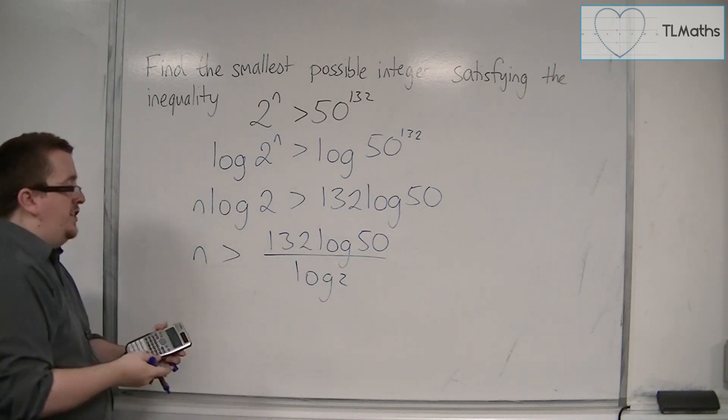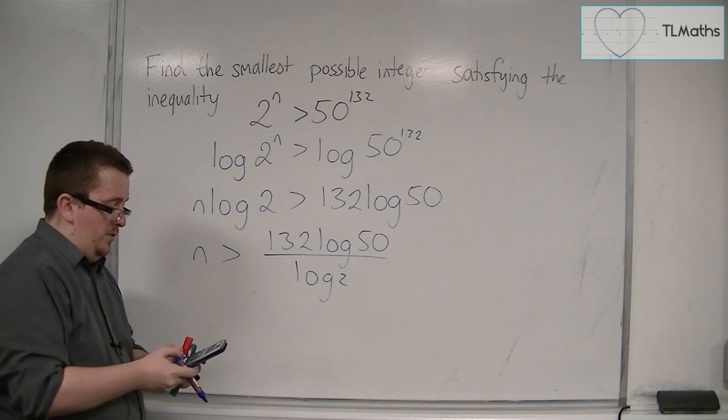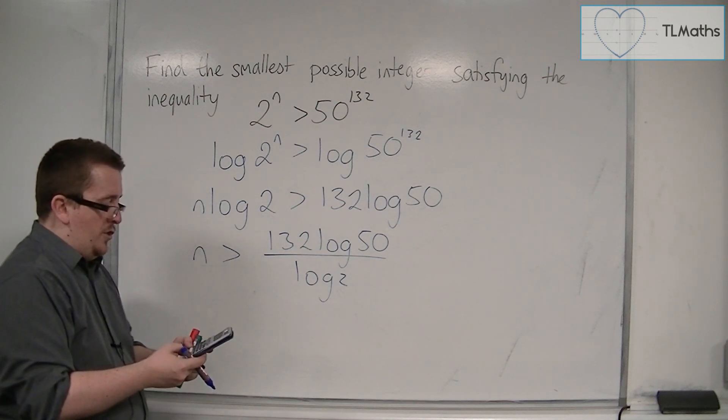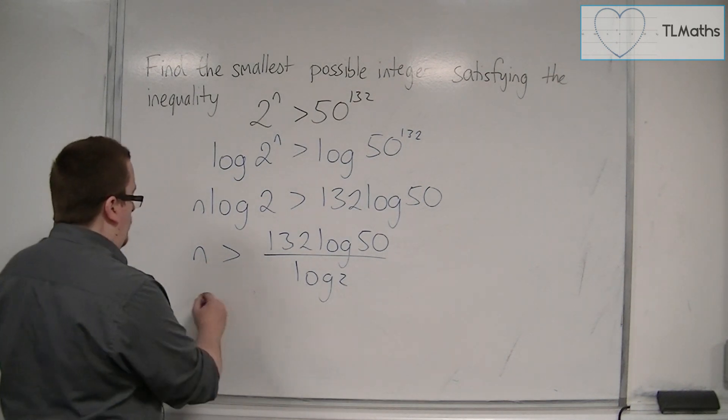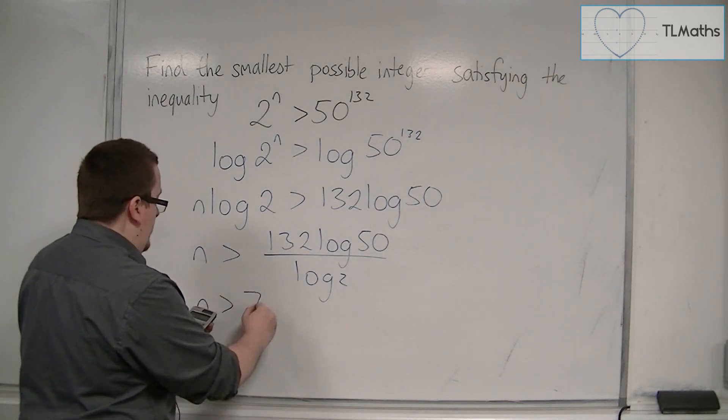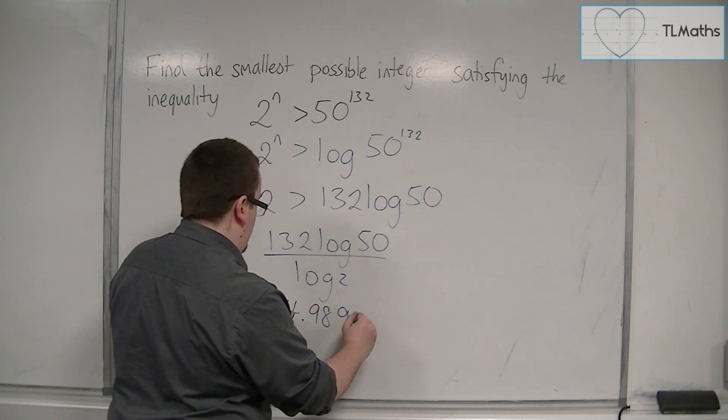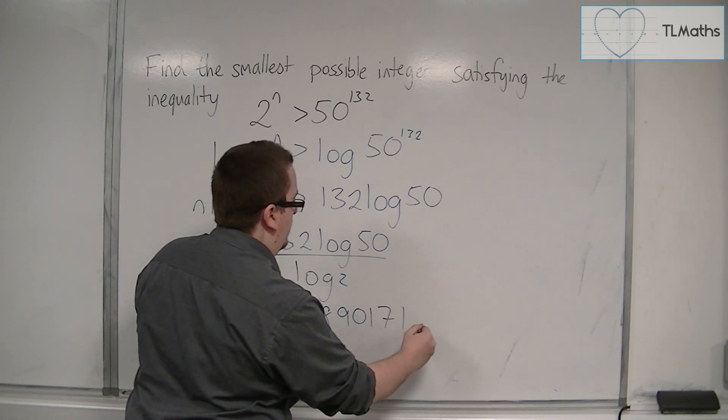So we have 132 times log 50, divided by log 2. This gives us n > 744.9890171, etc.